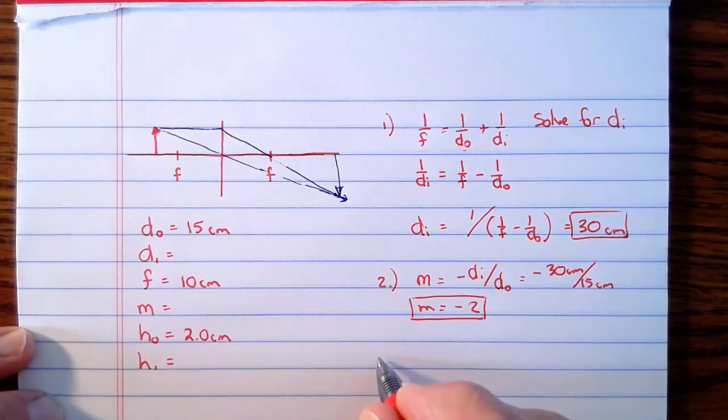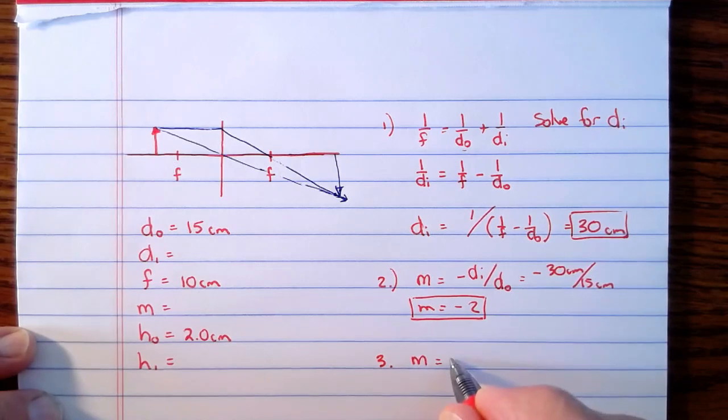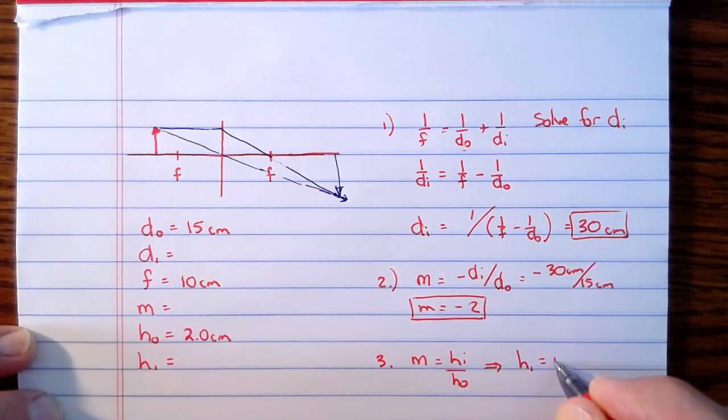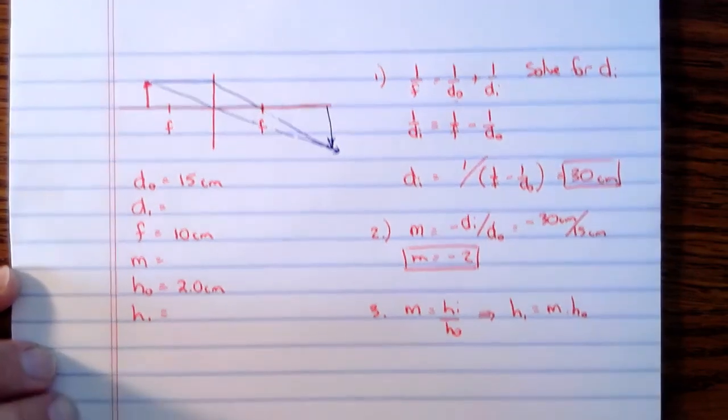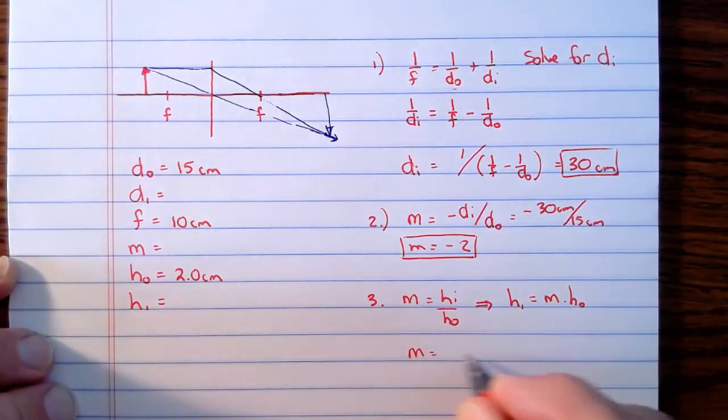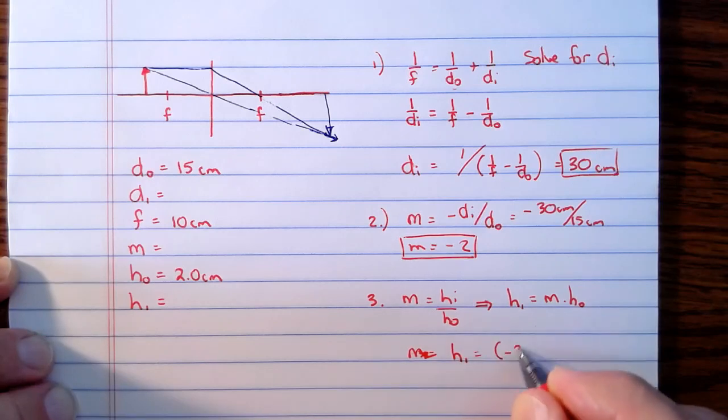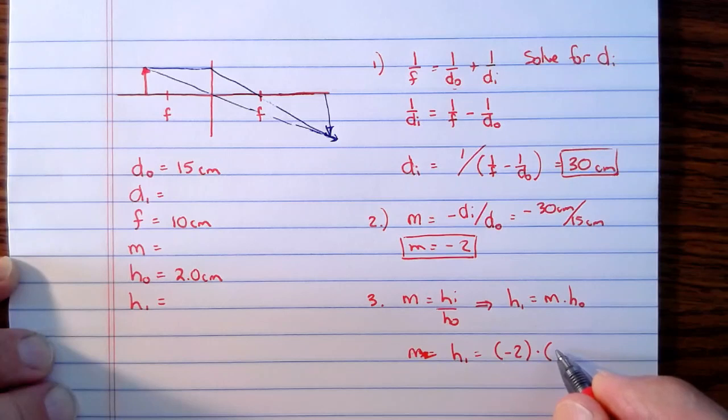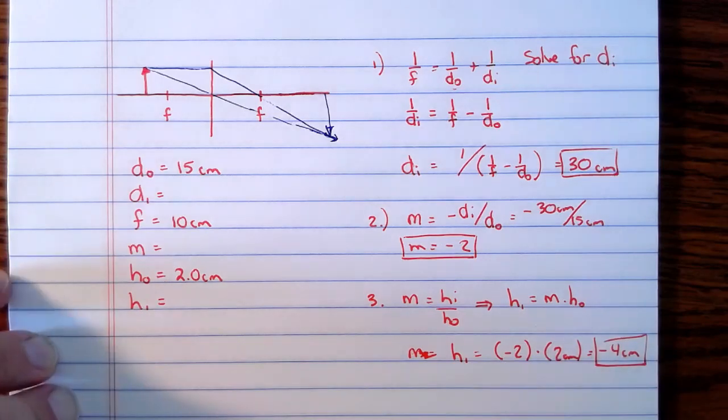The third thing we were asked to find is the height of the image. And so the height of the image, remember the magnification also equals the height of the image divided by the height of the object. And so if we want the height of the image, we can multiply both sides by the height of the object. So the height of the image is going to be the magnification times the height of the object. The magnification is negative 2, the height of the object was 2 centimeters. So the height of the image is going to be the magnification, which is negative 2, times the height of the object, which was 2 centimeters. And so that's negative 4 centimeters.